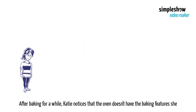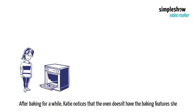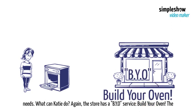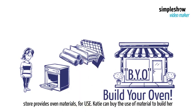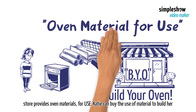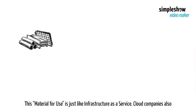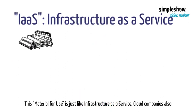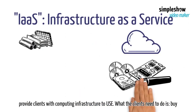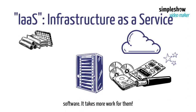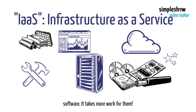After baking for a while, Katie notices that the oven doesn't have the baking features she needs. Again, the store has a BYO service — Build Your Oven — where the store provides oven materials for use. Katie can buy the use of materials to build her desired oven. It takes more work for her. This material-for-use service is just like infrastructure as a service. Cloud companies also provide clients with computing infrastructure to use. What the clients need to do is buy the use of the infrastructure, build their desired platforms, and run their special software. It takes more work for them.